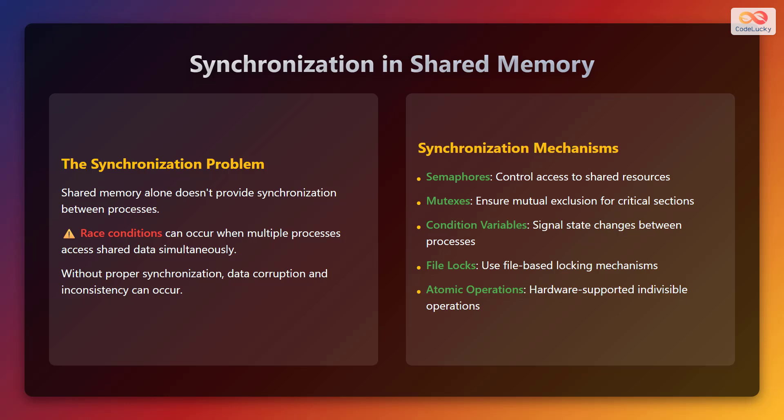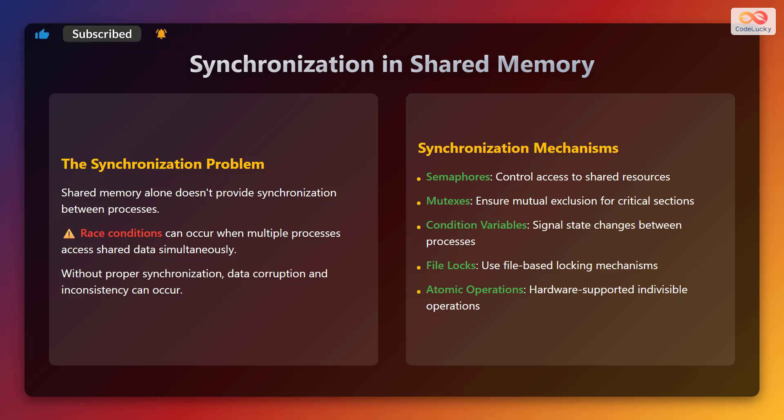Synchronization and shared memory. Shared memory alone doesn't provide synchronization between processes. Race conditions can occur when multiple processes access shared data simultaneously. Without proper synchronization, data corruption and inconsistency can occur. Therefore, we need synchronization mechanisms such as: semaphores to control access to shared resources, mutexes to ensure mutual exclusion for critical sections, condition variables to signal state changes between processes, file locks using file-based locking mechanisms, and atomic operations which are hardware-supported indivisible operations.